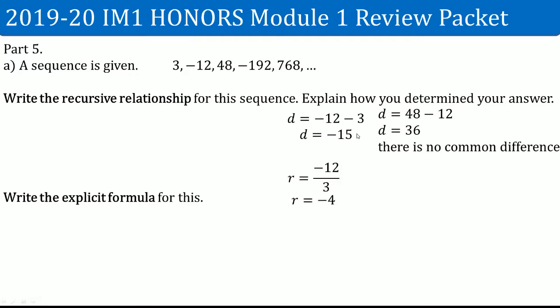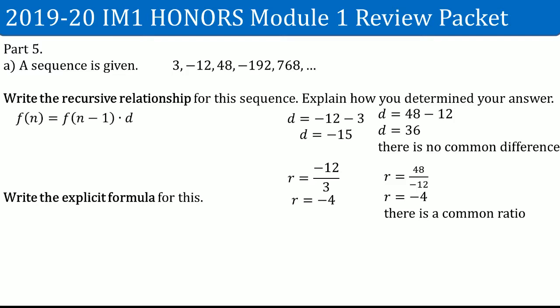Now I calculated the common ratio, which is the second term divided by the first term, giving r equals negative 4. I did it again for the third term divided by the second term, which was also negative 4. So I determined that there is a common ratio, meaning this is a geometric sequence.